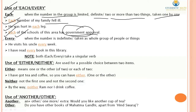Use of 'every': 'every' is used when the number is indefinite, and the whole group of people or things is taken as one. For example: 'He visits his uncle every week.' 'I have read every book in this library' — meaning all the books. One important point: both 'each' and 'every' always take a singular verb.